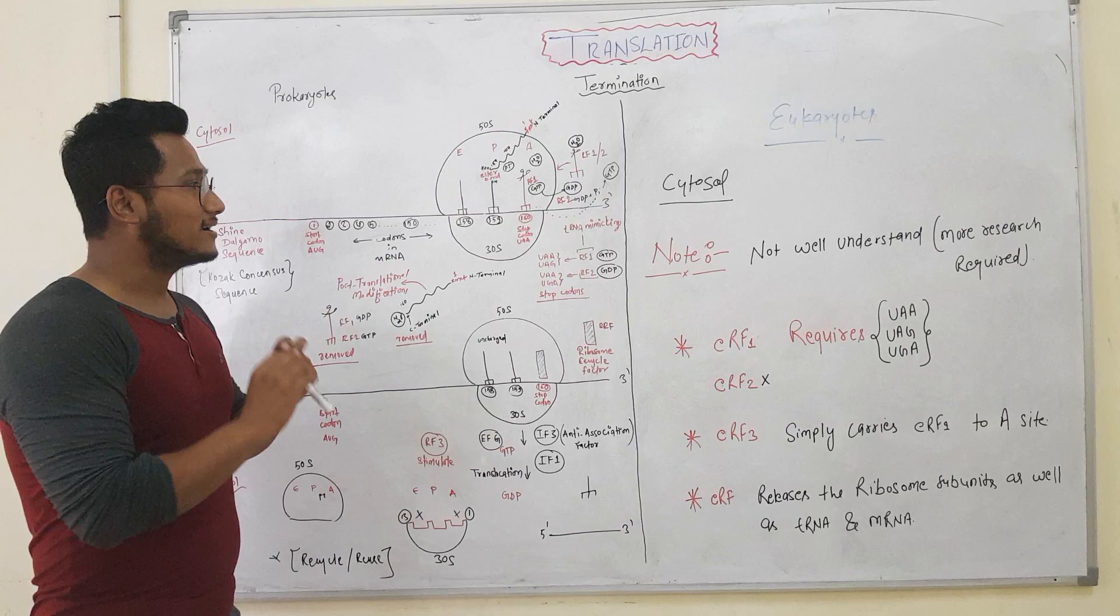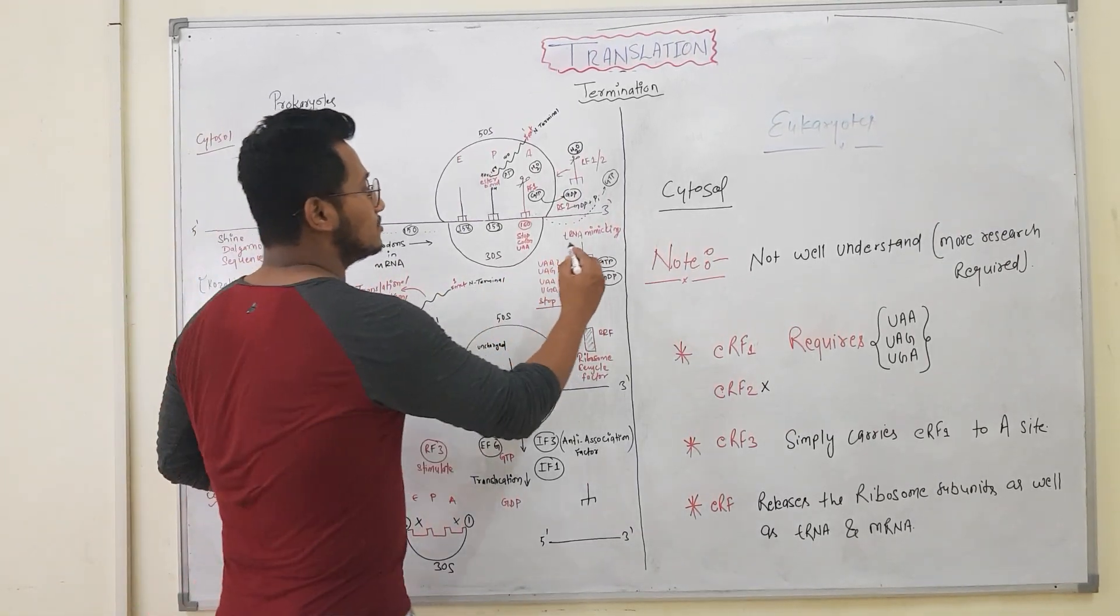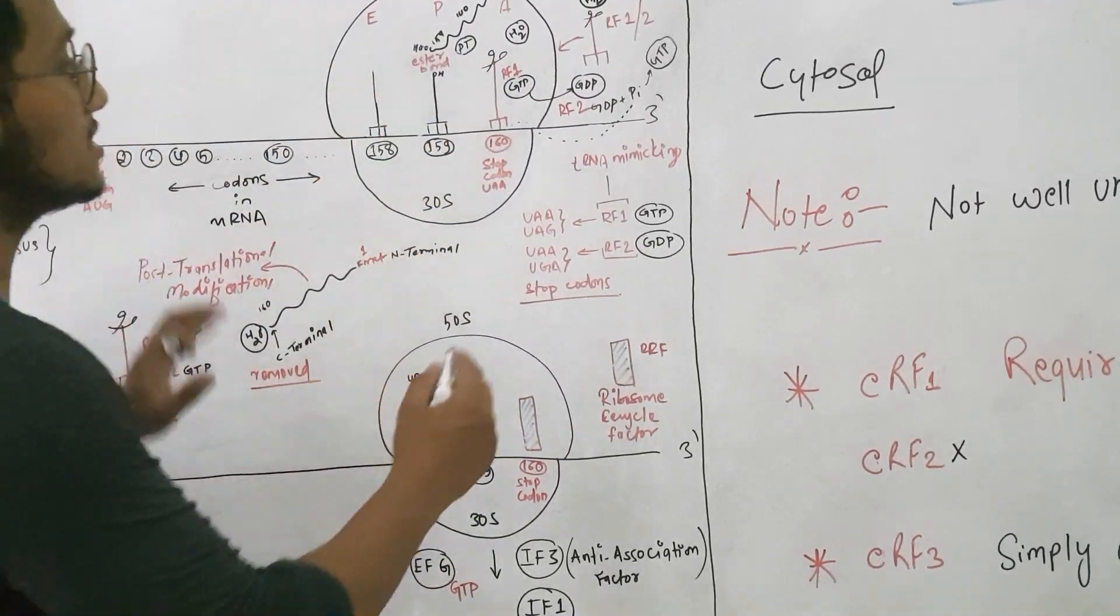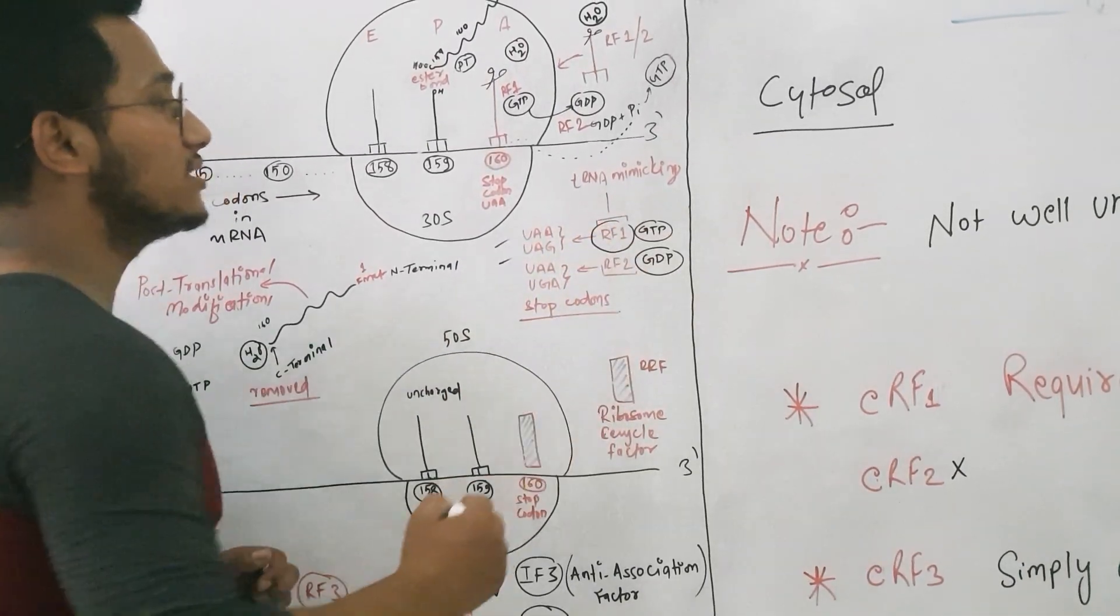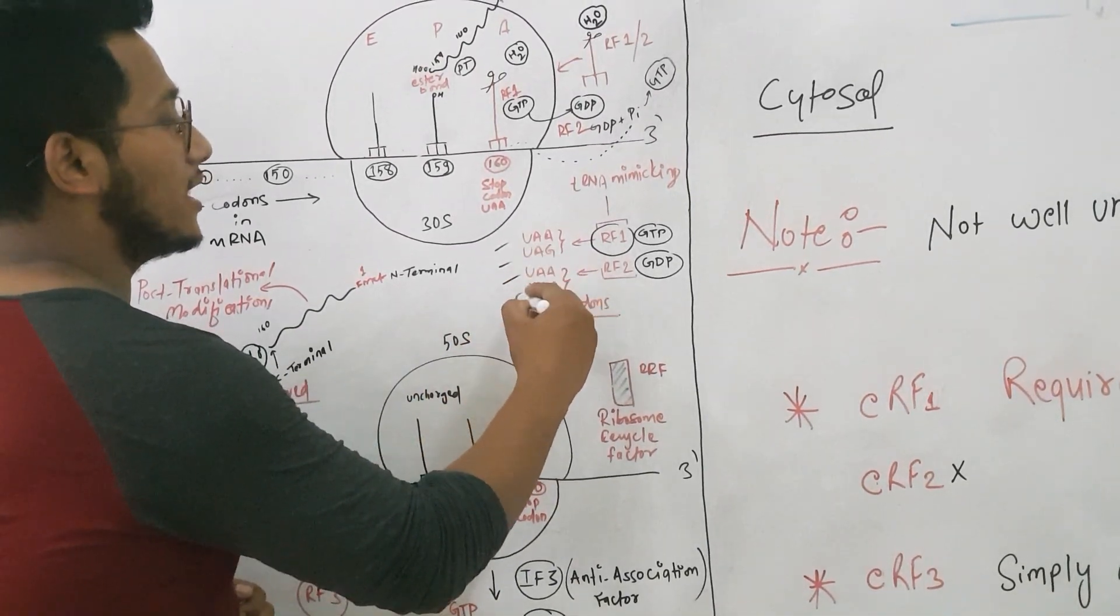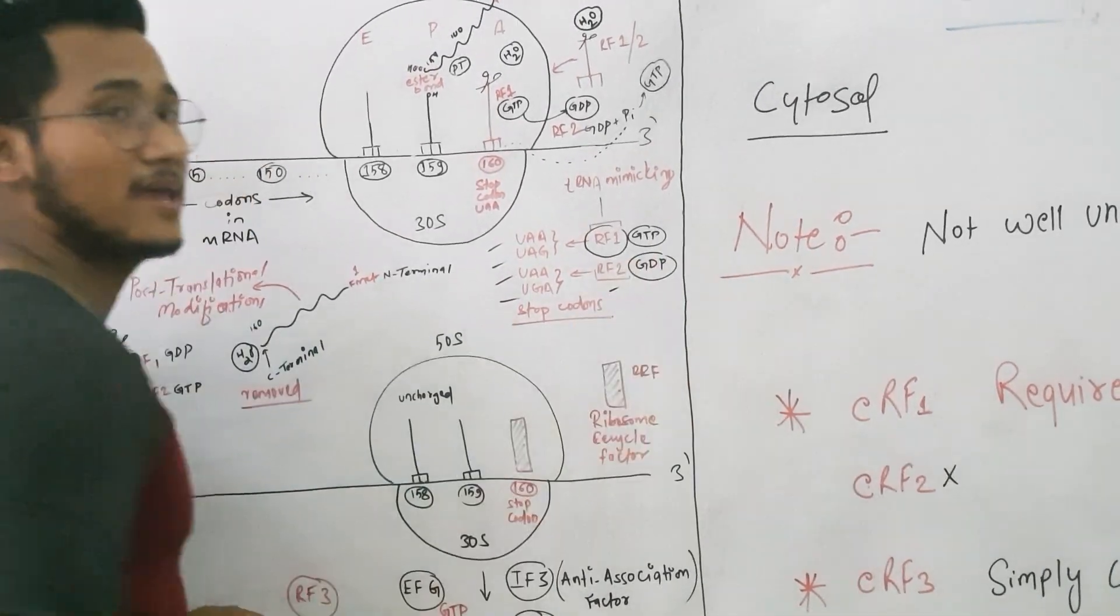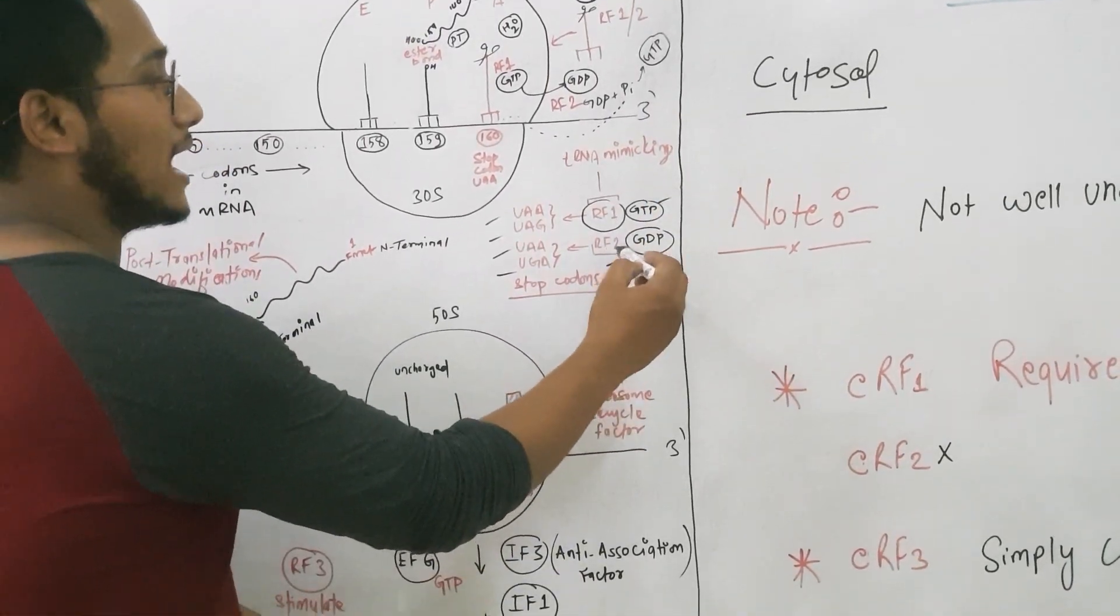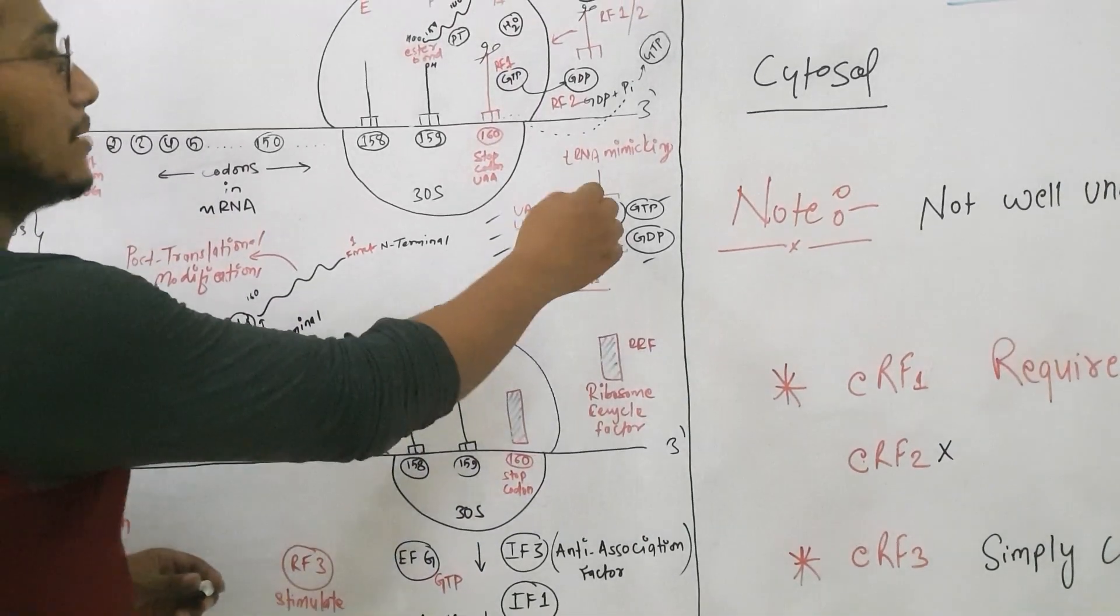You have to remember that the stop codons in case of prokaryotes—the stop codons like UAA and UAG—are recognized by a termination release factor RF1. And stop codons like UAA and UGA are recognized by RF2. You can also see the difference that RF1 is GTP-based protein while RF2 is GDP-based protein, and both of these mimic tRNA.